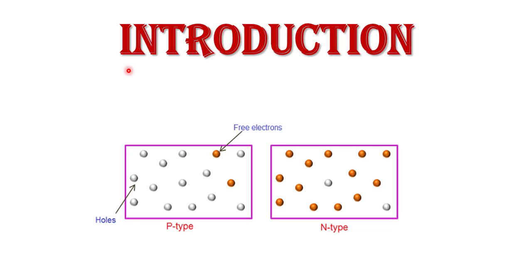In my previous video I have already explained extrinsic semiconductor and its types — p-type and n-type semiconductor material. The p-type semiconductor material is formed by doping a pure germanium or silicon intrinsic semiconductor crystal with a trivalent impurity atom. The trivalent impurity atom has three valence electrons in its outermost orbit. Examples of trivalent impurity atoms are boron, gallium, and indium.